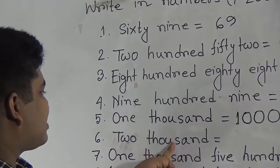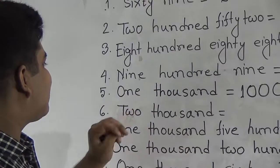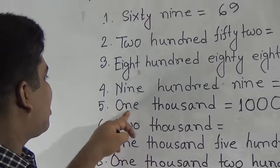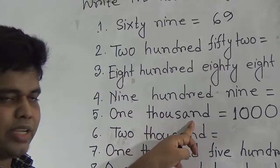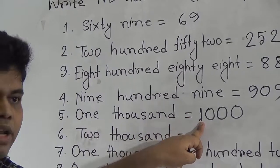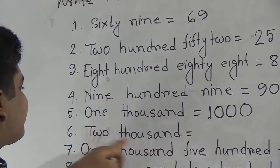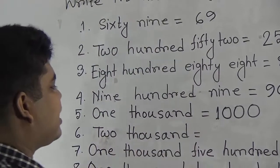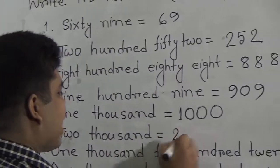2000 is just similar to 1000. For 1000, we write 1 here, and for 2000, we write 2 here. The hundreds place, tens place, and ones place are absent, so we write 0, 0, 0. That means ones place 0, tens place 0, and hundreds place 0. So it is called 2,000.